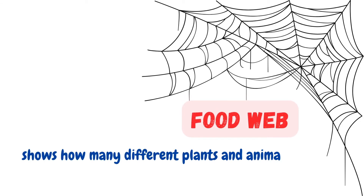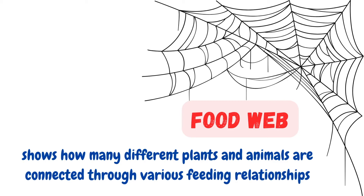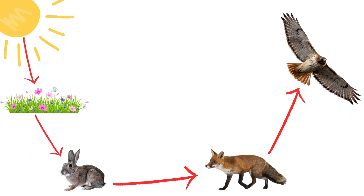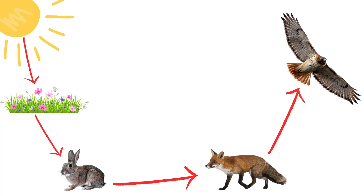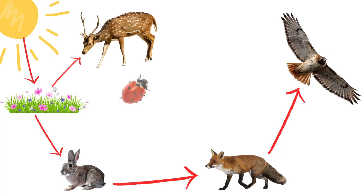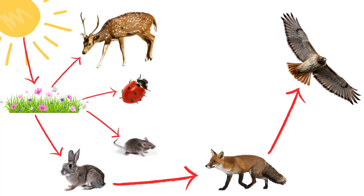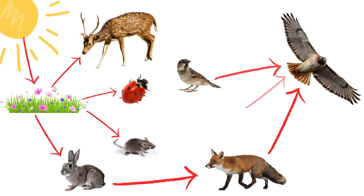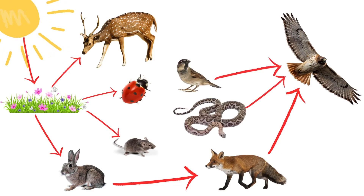Unlike a food chain, a food web shows how many different plants and animals are connected through various feeding relationships. Let's take a closer look at our example. While the rabbit eats grass, other animals like deer and insects eat it too. The hawk doesn't just hunt foxes — it might also catch a sparrow or a snake.